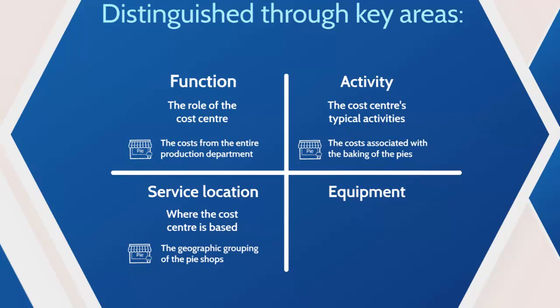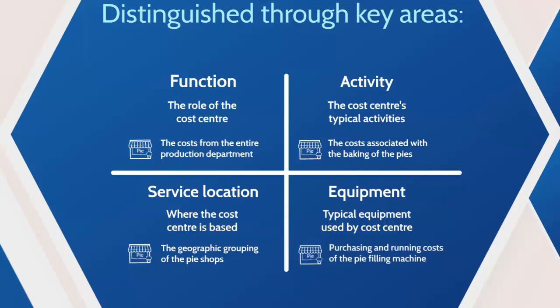The last type is the equipment cost center, which consists of all costs associated with the purchasing and running of a particular piece of equipment or machinery. For example, the pie shop has a machine that puts the filling in all of their pies — the costs related to this machine include the price the business paid for it, the cost of insuring it, and the cost of servicing and maintaining it. All acquisition and running costs of this piece of equipment would be collected under the pie filling machine cost center.